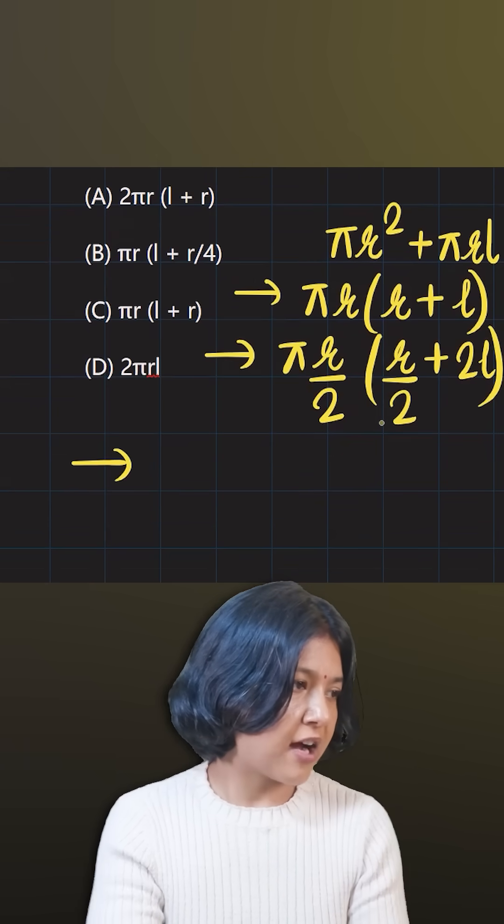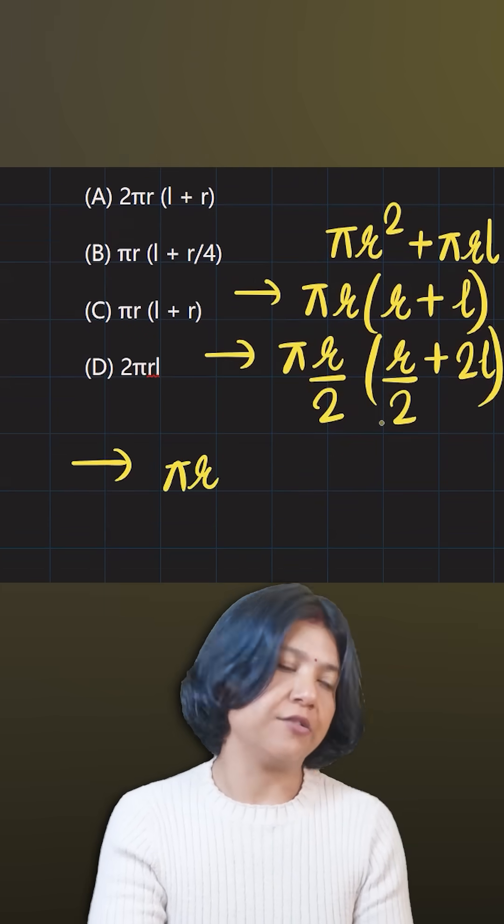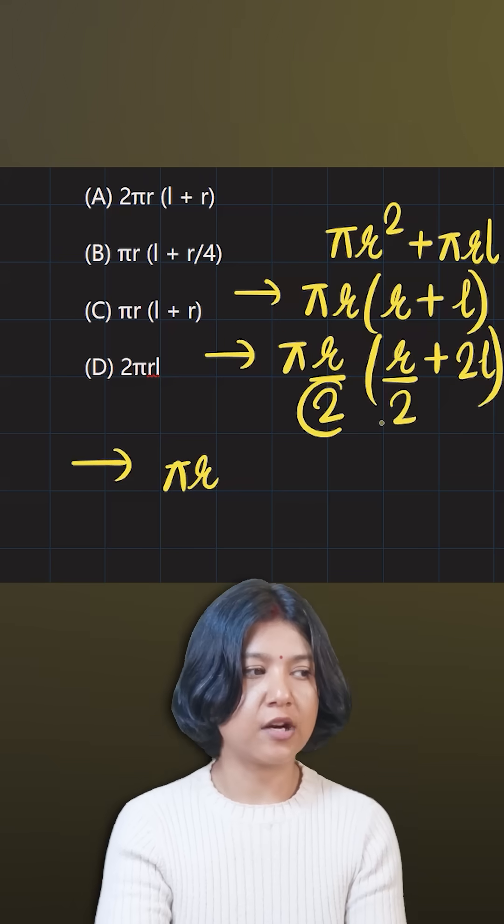Now let's simplify. Pi r is already out, let me write it outside. This two I can take out here.